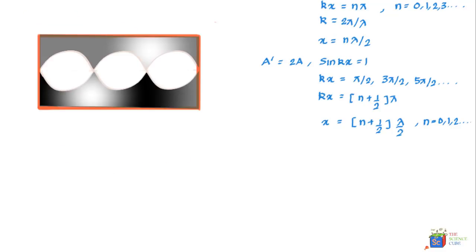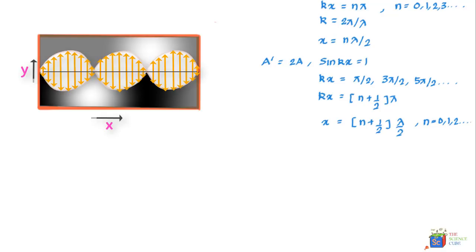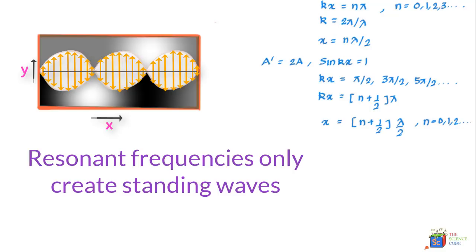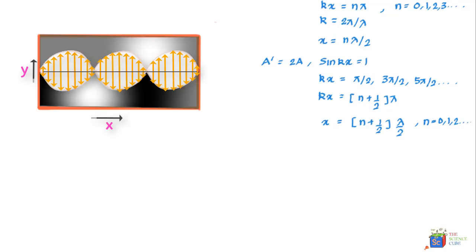And when this happens for certain frequencies not all frequencies the interference produces a standing wave pattern or you could say an oscillating pattern with nodes and antinodes like this. And when this happens we say that a standing wave has been created and the chord or the string is said to be resonating at these certain frequencies that are called resonant frequencies. And if the string is oscillating at some frequency other than a resonant frequency a standing wave will not appear.